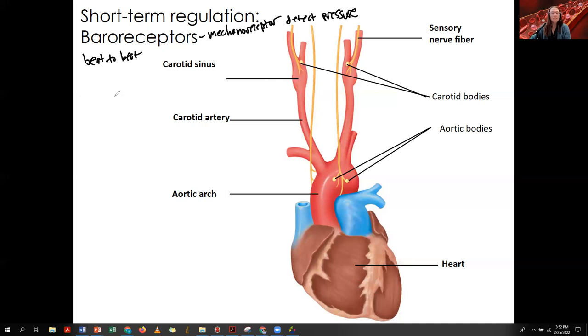And what these are detecting is not local changes in blood pressure, right? We don't really, for this, these guys, we don't care about what's going to what tissues. We care about what's going to the whole body. So this is regulating MAP, mean arterial pressure, or MABP, same thing, right?